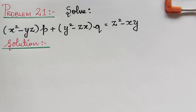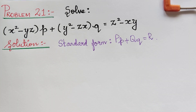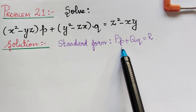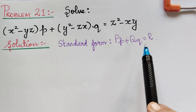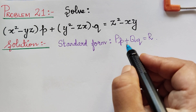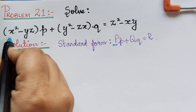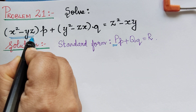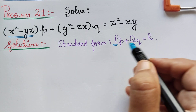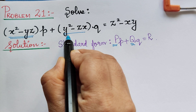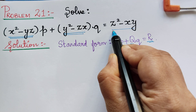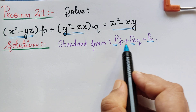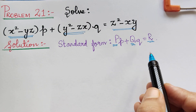The first step is to write the standard form of Lagrange's equation, which is given by capital P times small p plus capital Q times small q equals capital R. On comparing with the given equation, we observe that capital P equals x squared minus yz, capital Q equals y squared minus zx, and capital R equals z squared minus xy.